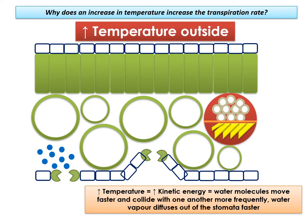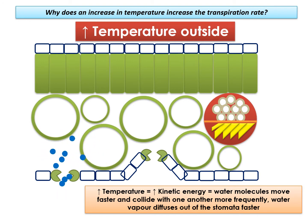Let's understand what happens when there's an increase in temperature outside the plant. What we see on the slide is a section through a leaf — the spongy mesophyll, the palisade mesophyll, and the stomata at the lower epidermis, with water vapor molecules represented. An increase in temperature increases the kinetic energy of the water molecules, meaning they move faster and collide more frequently, causing water vapor to diffuse out of the stomata faster.